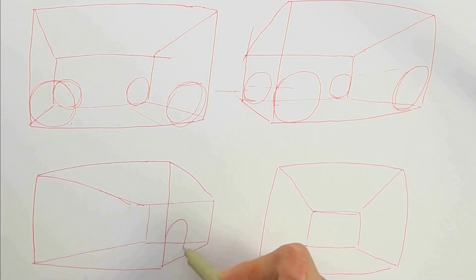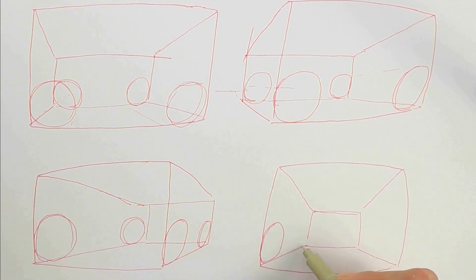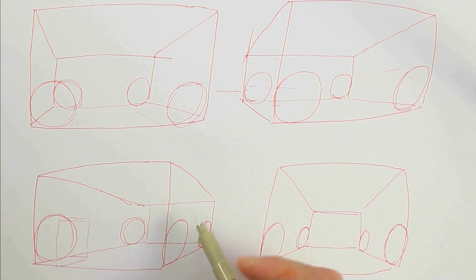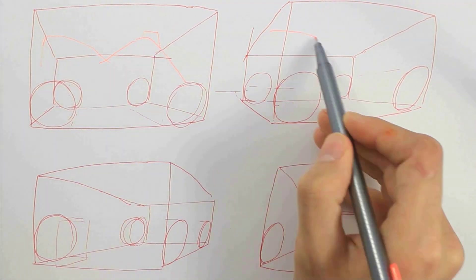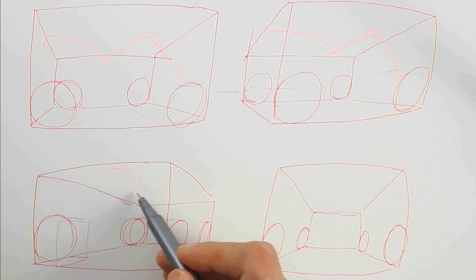Once I'm happy with the placement of these forms, I add in four ellipses in each to represent the tires. Now again, I'll block in the center line as I did in the beginning of the video.